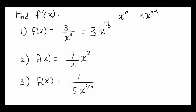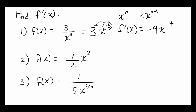So in this case, you're going to bring negative 3 down to the front. So f prime of x is going to be 3 times negative 3, which is negative 9, times x to the negative 3 minus 1, or negative 4. And that's going to be negative 9 over x to the fourth.